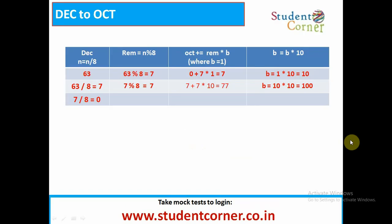Now, decimal to octal conversion. Here we divide by 8 and we will get a remainder. That remainder is stored, and B is equal to B multiplied by 10. These are the lines of code: N is equal to N divided by 8; remainder is equal to N mod 8 — that is the first line.